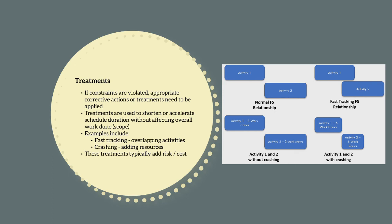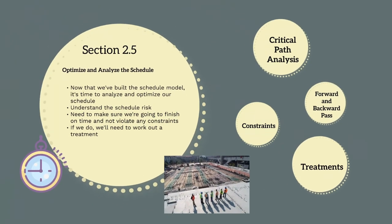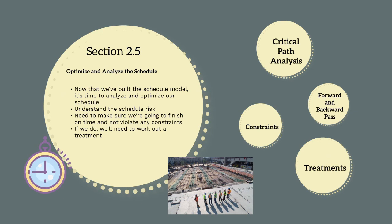Crashing is different to fast tracking. During crashing you still wait for activity 1 to finish before activity 2 begins; however you increase the amount of resources to reduce the time taken to complete the activities. For example, to construct a trench faster you might use six work crews instead of three. Crashing typically increases cost, as you need more resources that require more supervision and will likely not work as efficiently and effectively as fewer resources. So basically this gives us an overview of how to identify the project critical path, analyse the schedule, confirm constraints haven't been violated, and explore options to shorten project duration if required.